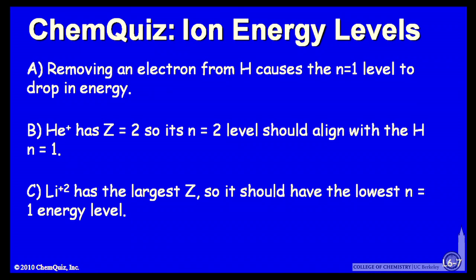Let's look at some possible arguments. For A, removing an electron from hydrogen to make H+ causes the n=1 level to drop in energy. For B, He+ has Z=2, so its n=2 level should align with the hydrogen n=1 level. Or C, lithium +2 has the largest Z, so it should have the lowest n=1 energy level. Consider those three arguments and make another selection.